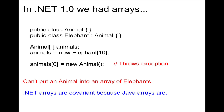.NET arrays are covariant because Java arrays are. Back during the design phase of .NET, the decision was made to make arrays covariant because there were legions of Java programmers out there who understood covariant arrays, and they wanted to be familiar to those programmers.